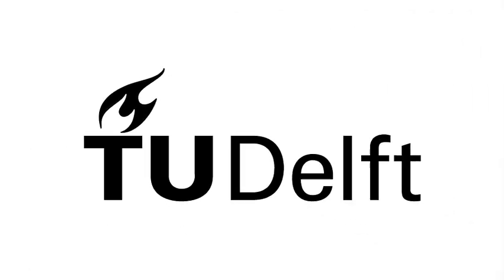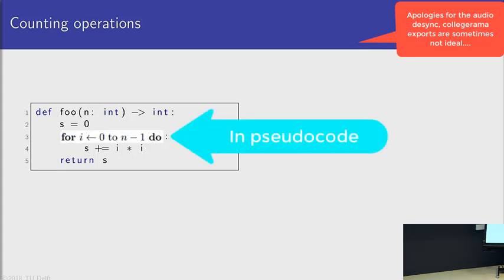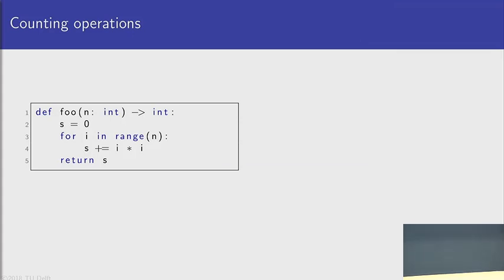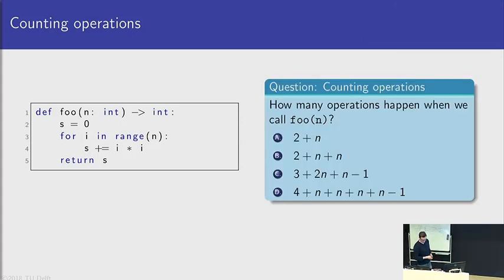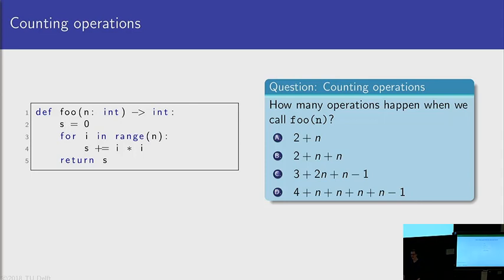Here's a bit of code summing i squared. How many operations happen when I call it with some parameter n? There's a bunch of options for you, including 'I don't know' this time. Take a minute or two, discuss with your neighbor if you want, and tell me how many operations happen when we call foo with parameter n.